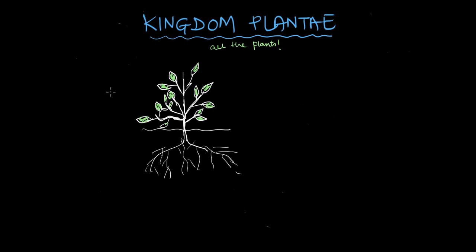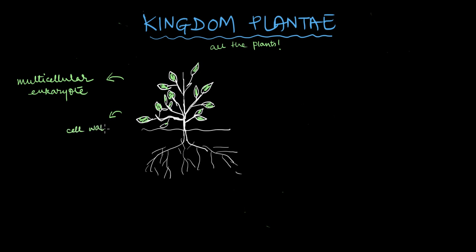From tiny mosses to giant trees, every plant is a multicellular eukaryote equipped with cell walls — kind of like how fungi are, except a plant's cell wall is made up of cellulose and a fungus's cell wall is made up of chitin. This is actually a very characteristic difference between plants and fungi: this cellulosic cell wall found in plants.